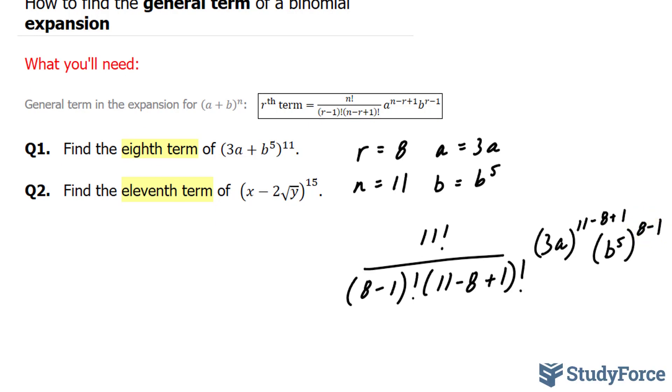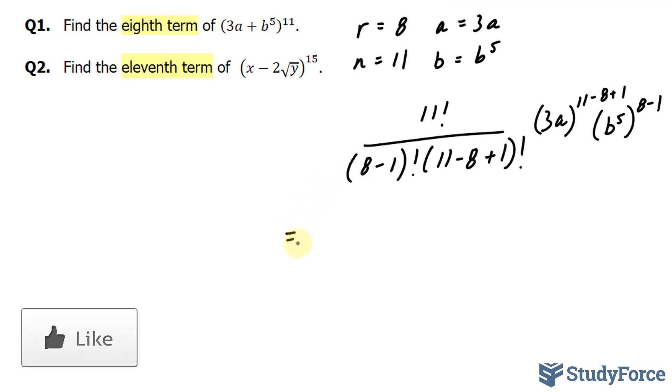Let's go ahead and simplify this expression. If we simplify it, we end up with 11 factorial over 7 factorial times 11 minus 8, which is 3, plus 1, 4 factorial. We'll reduce this down in the next step.